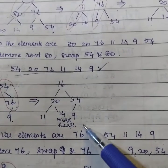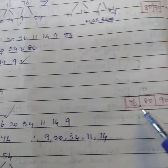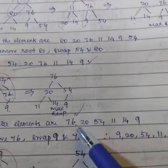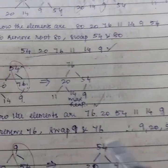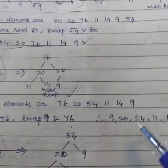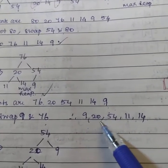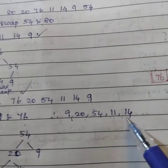Now you are taking the root 76 away. And for that, we need to interchange 9 and 76. Swapping 9 and 76. So the element now becomes 9, 20, 54, 11 and 14.